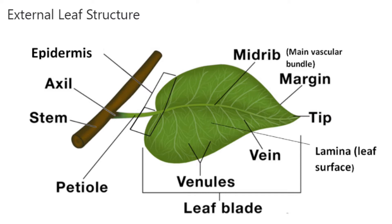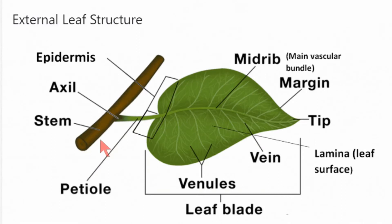It is the stem. The leaf emerges from the point of the stem called the axil, and the outer layer is called the epidermis.